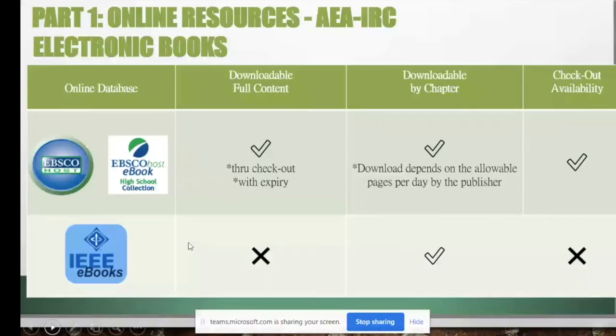EBSCO and EBSCO high school e-books are downloadable in full content. However, you need to check them out. This is the only e-book collection that requires checkout, so you need to create a personal account on the EBSCO platform. It has an expiration — you can download by chapter and read offline, but once the loan period expires (e.g., three days), the file will be removed and you'll need to download again.